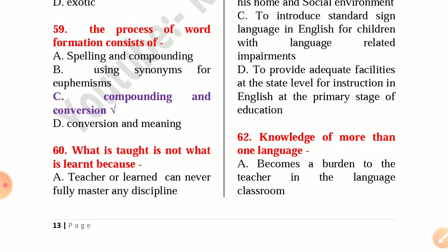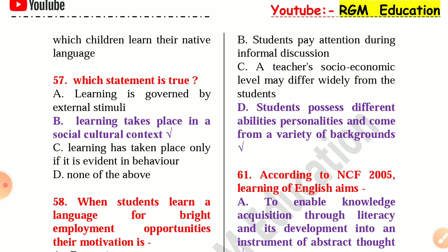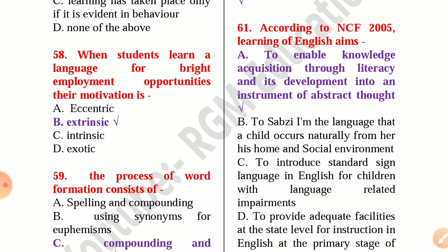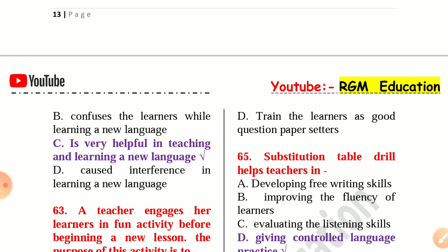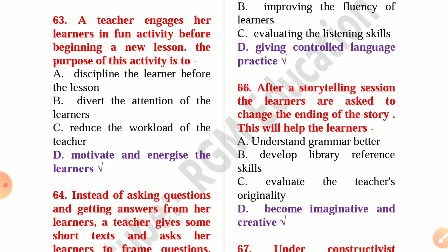Number 58: When students learn a language for bright employment opportunities, their motivation is extrinsic. Question 59: The process of word formation consists of compounding and conversion. Question 60: What is taught is not what is learned because students possess different abilities, personalities and come from a variety of backgrounds. According to NCF 2005, learning of English aims to enable knowledge acquisition through literacy and its development into an instrument of abstract thought. Question 62: Knowledge of more than one language is very helpful in teaching and learning a new language. Question 63: A teacher engages her learners in a fun activity before beginning a new lesson to motivate and energize the learners.